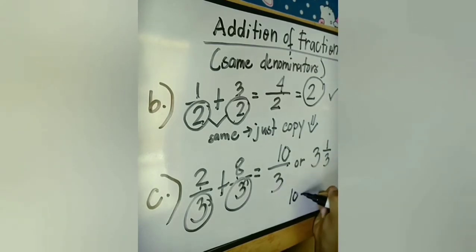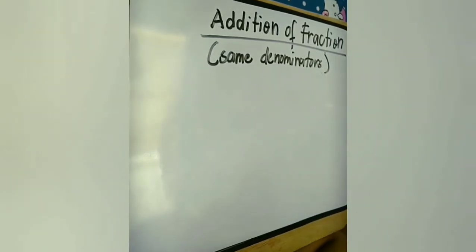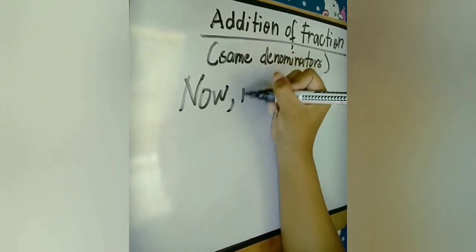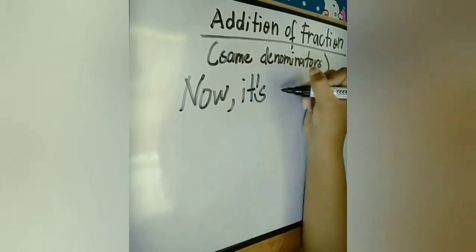You can check whether 10 divided by 3, the answer is 3 over 3 and 1 third. Okay, we are through discussing the addition of fraction with the same denominators.